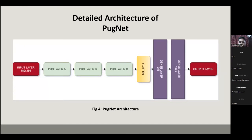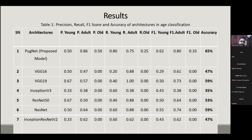PugNet uses three main pug layers that identify different features of pug marks: Pug Layer A, Pug Layer B, and Pug Layer C.